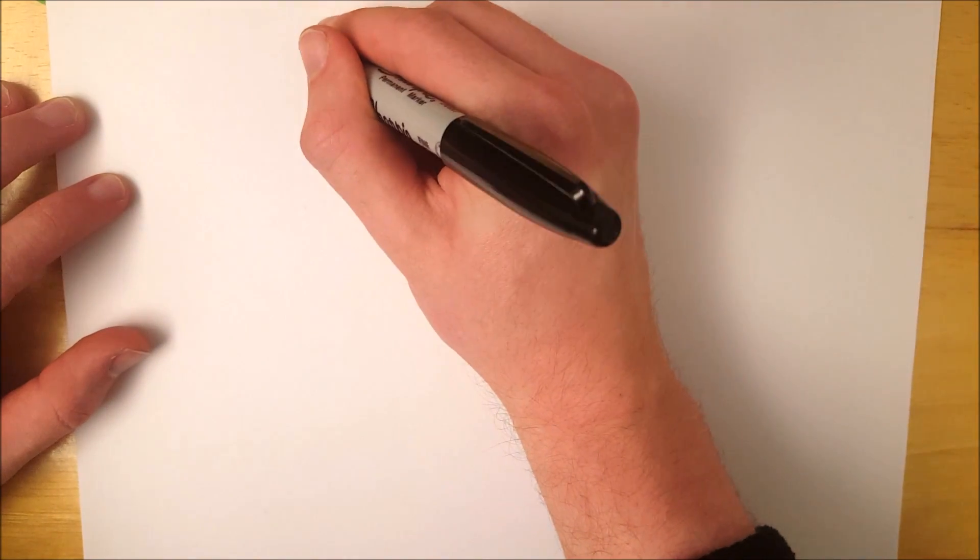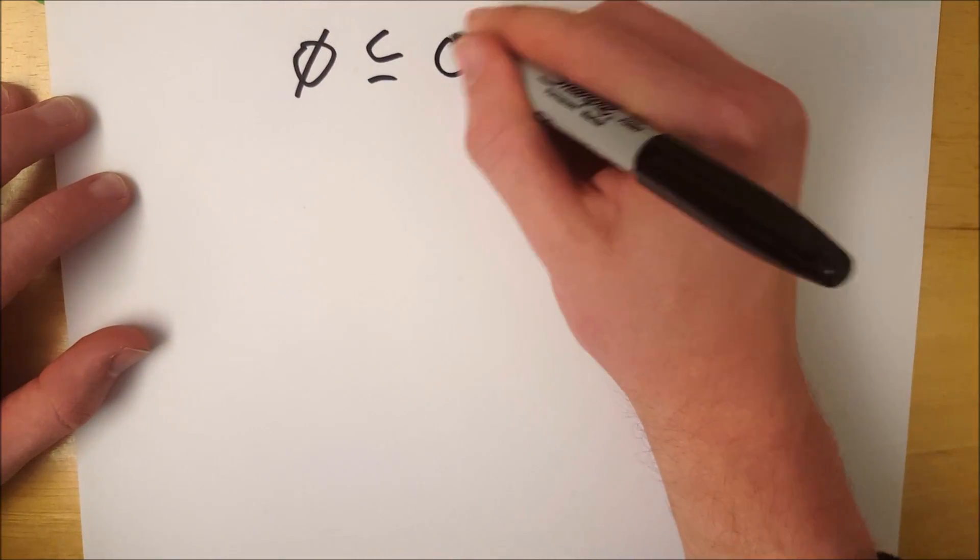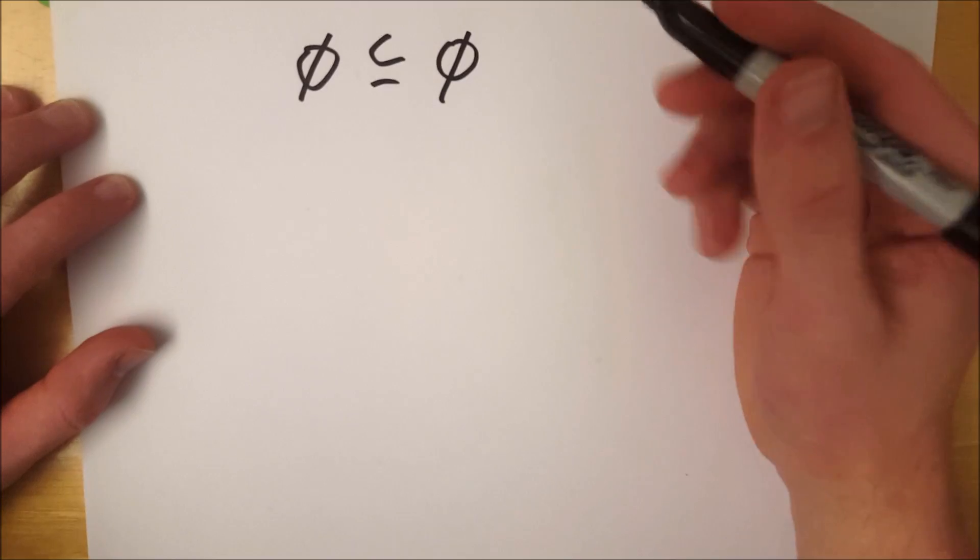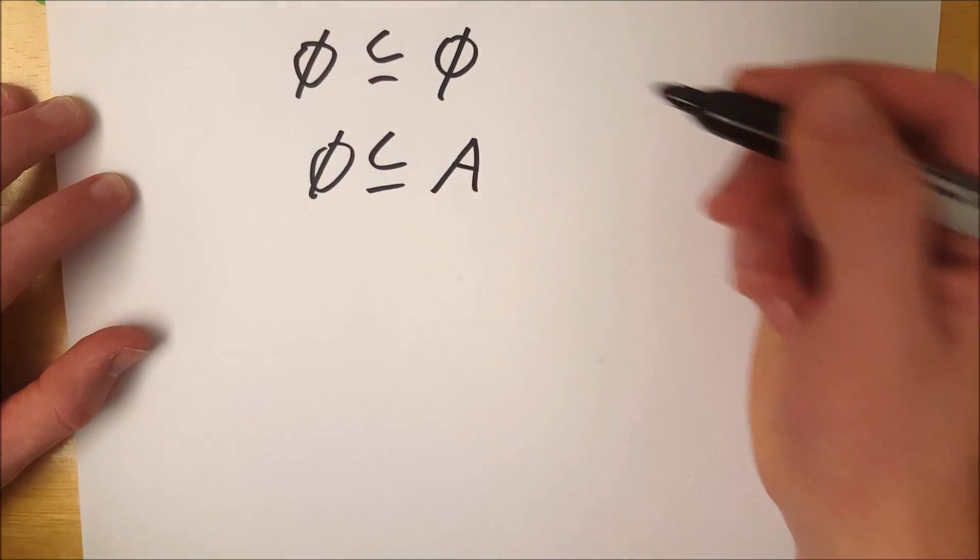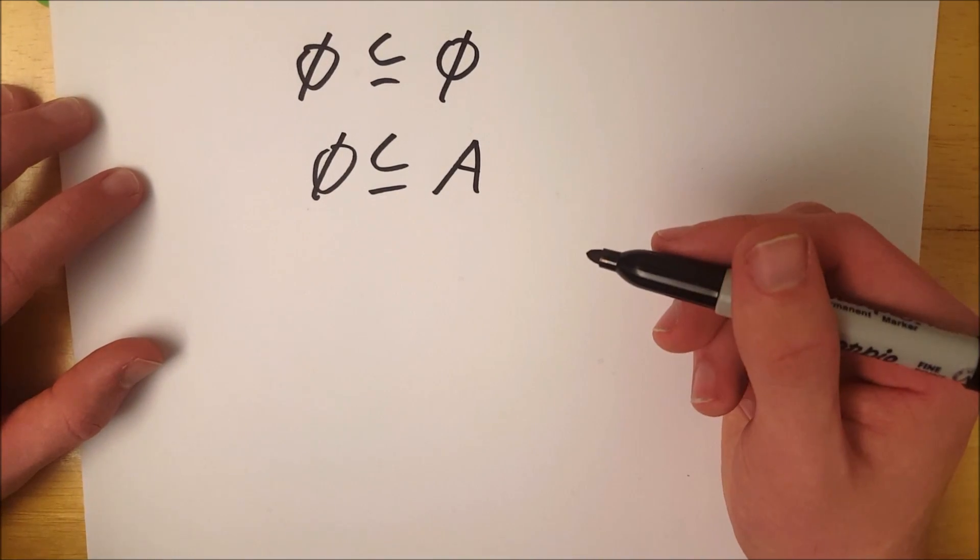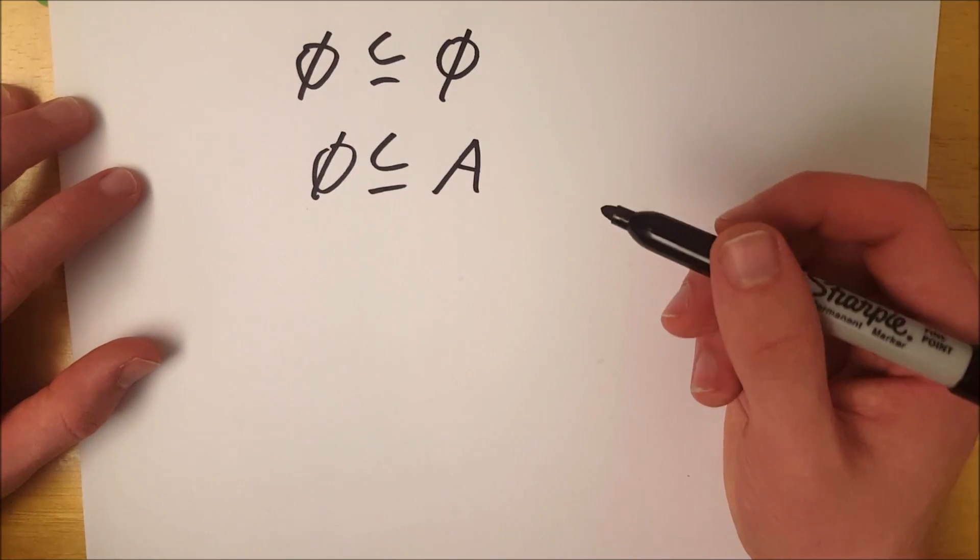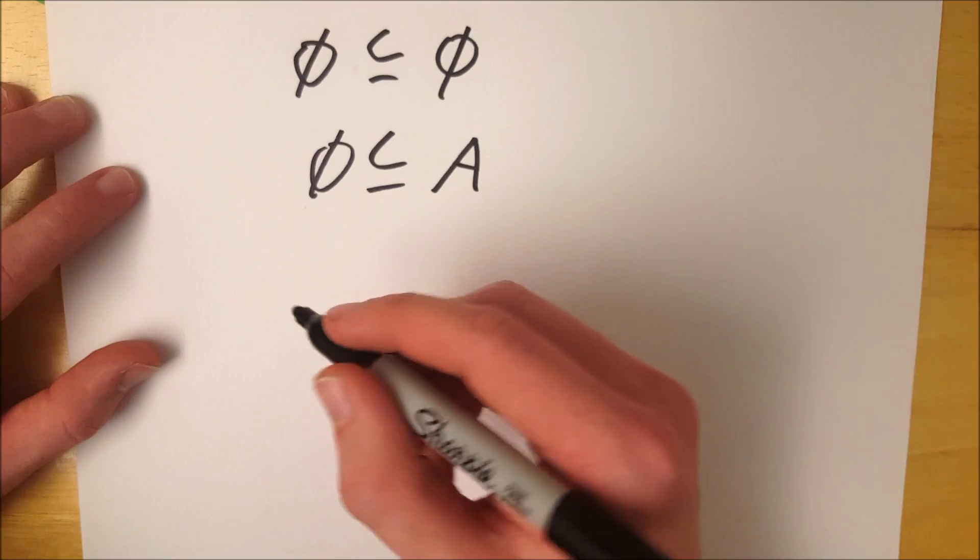Which is, why is the empty set a subset of every single set you can imagine? It's a subset of the empty set, it's a subset of any generic set A. The empty set is always a subset of any set. Why is that? Well, there's one particular perspective that I have on it that I think makes it pretty easy to comprehend, so that's how I'm going to explain it to you.